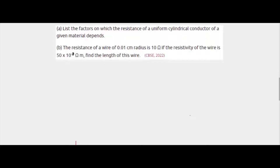Hello students, welcome back. Let's take up the next question. The question has two parts: first, list the factors on which the resistance of a uniform cylindrical conductor of a given material depends. Second, the resistance of a wire of 0.01 centimeter radius is 10 ohm; if the resistivity of the wire is 50 into 10 to the power minus 8 ohm meter, find the length of this wire.